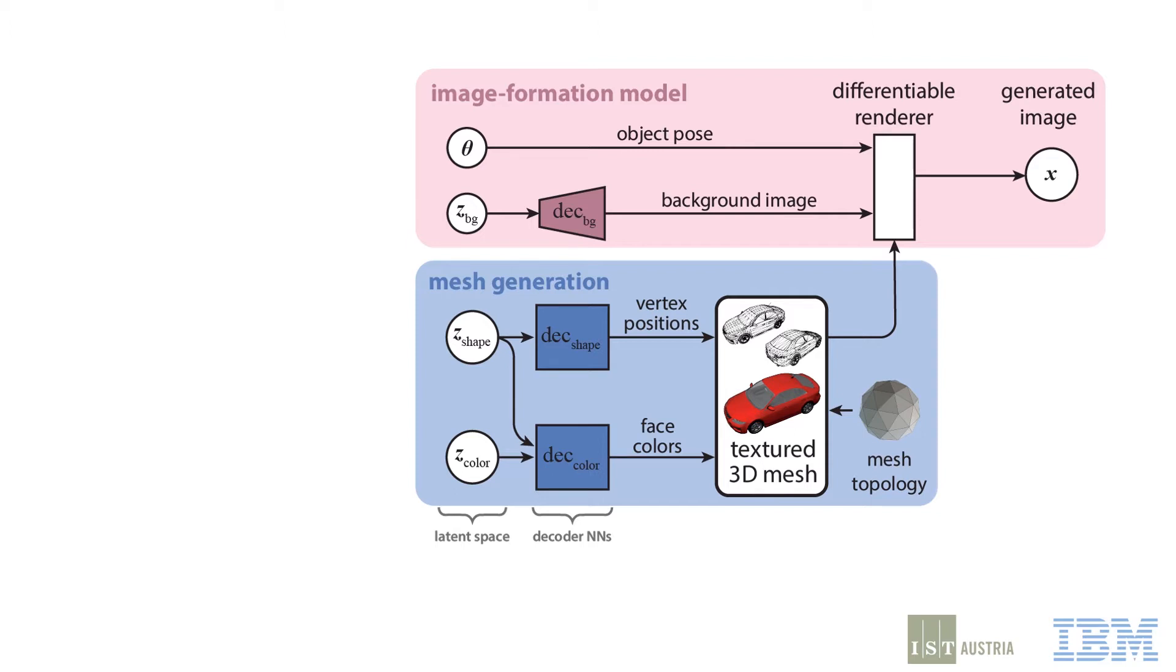Then, it places the mesh in front of a perspective camera and differentially renders it over the background. Finally, we add Gaussian noise, so that the likelihood is well defined.